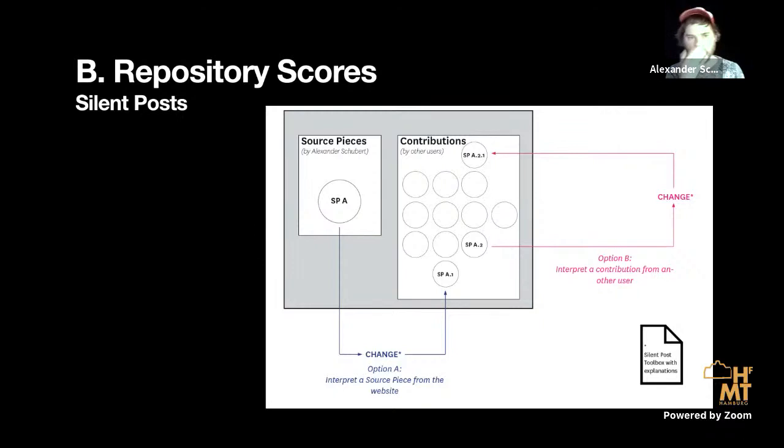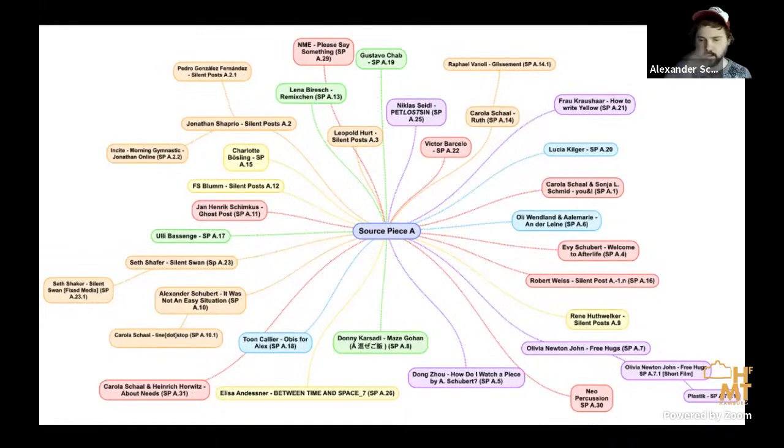Another piece that falls into these collaborative works is a container of pieces called Silent Posts. I gave it the name repository pieces or repository scores. It works in a way that it has a starting score with material. Then everybody can take that score and associated media material and create a new version based on it.